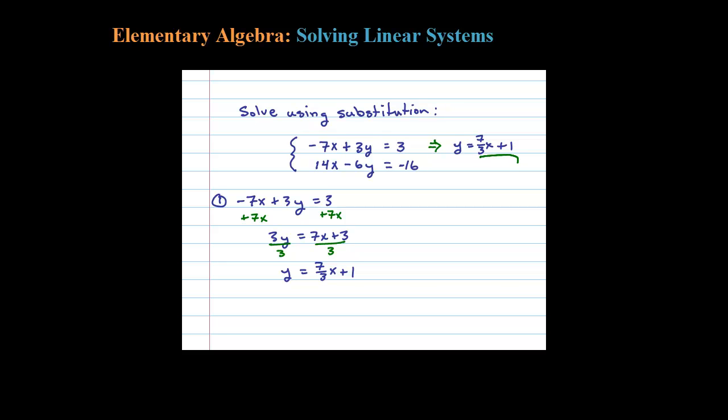Now let's take that y and substitute that into the second equation. This is the substitution step. That leaves me with 14x minus 6 times y, I put a blank parentheses, equals negative 16. That was supposed to be y and we figured y was 7 thirds x plus 1.